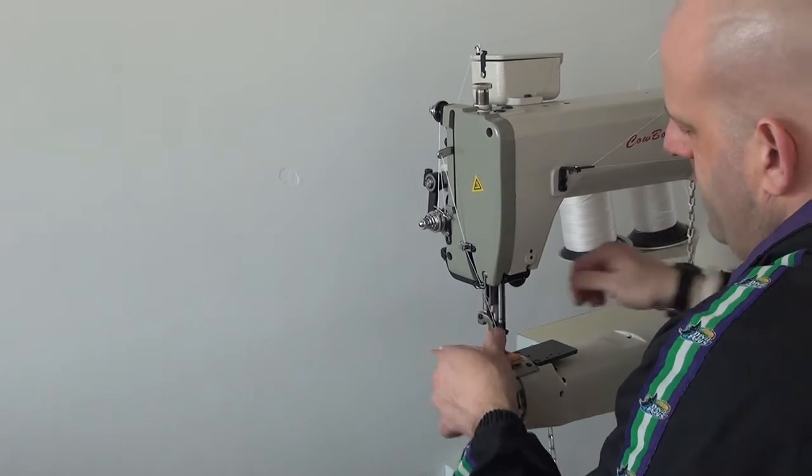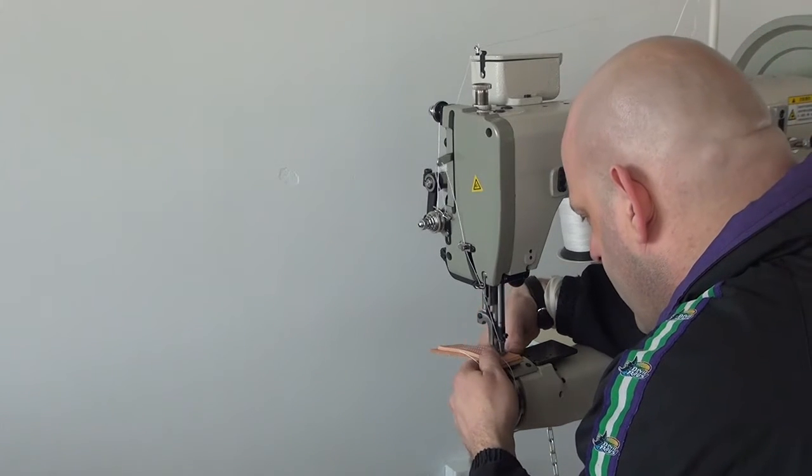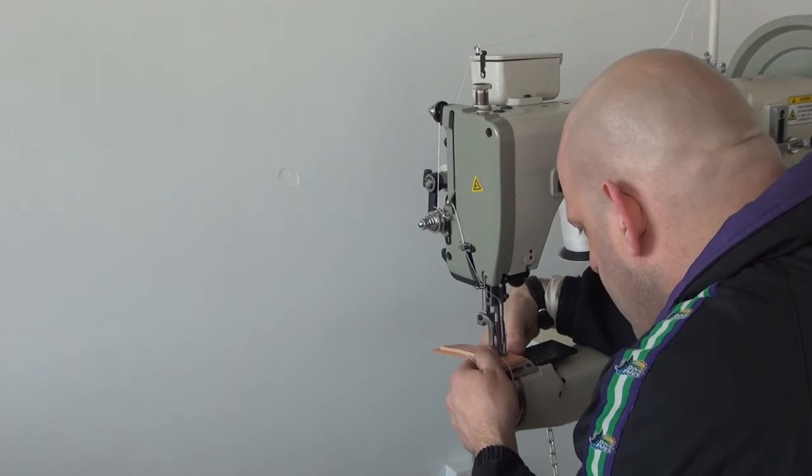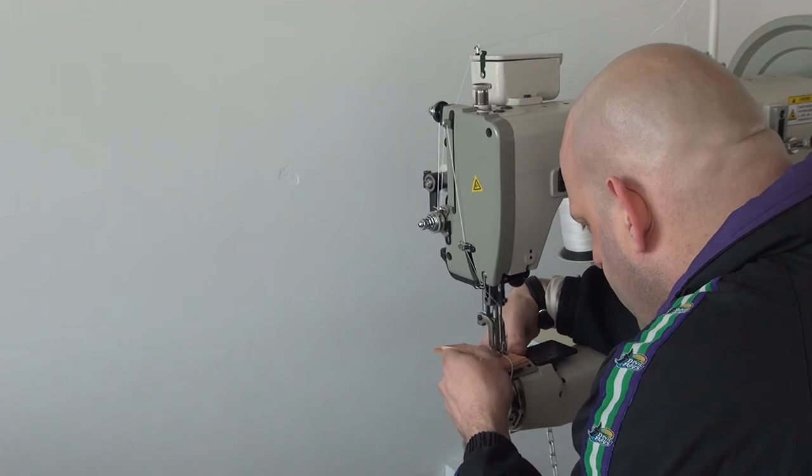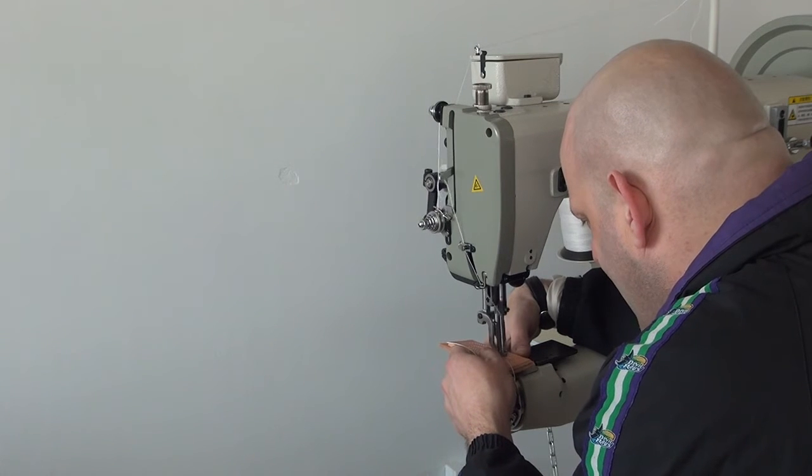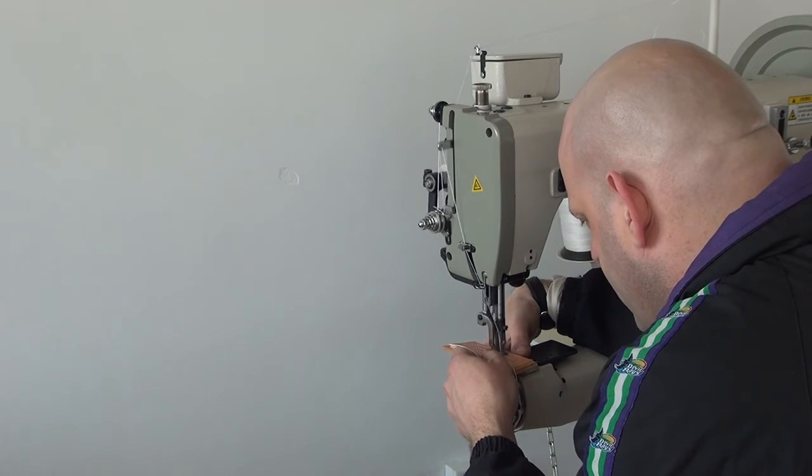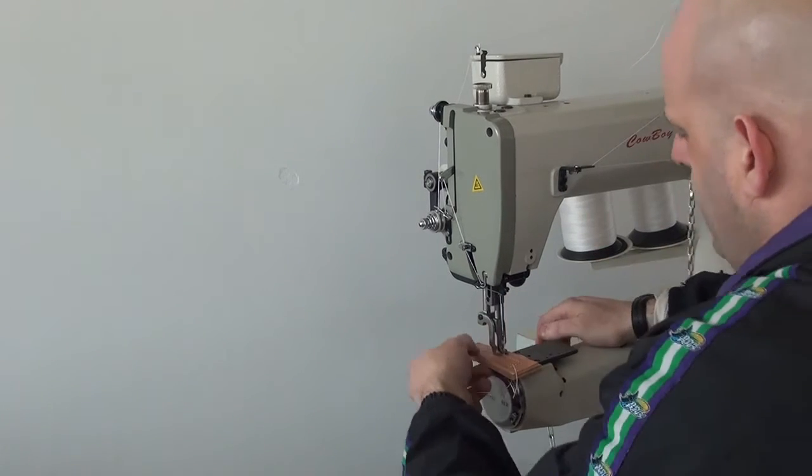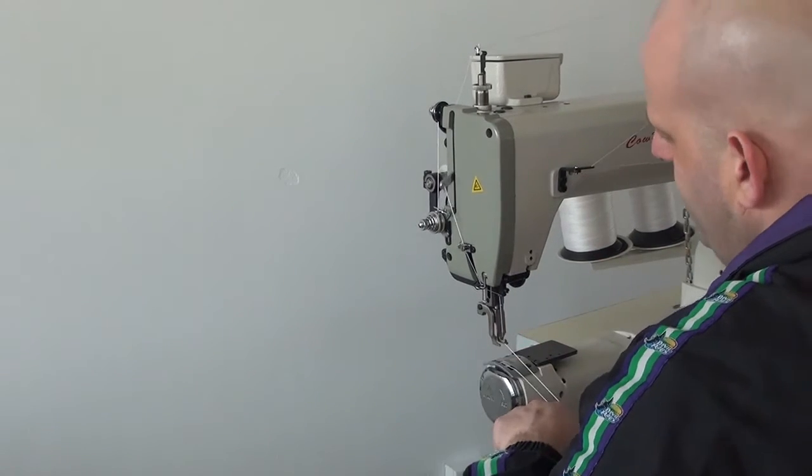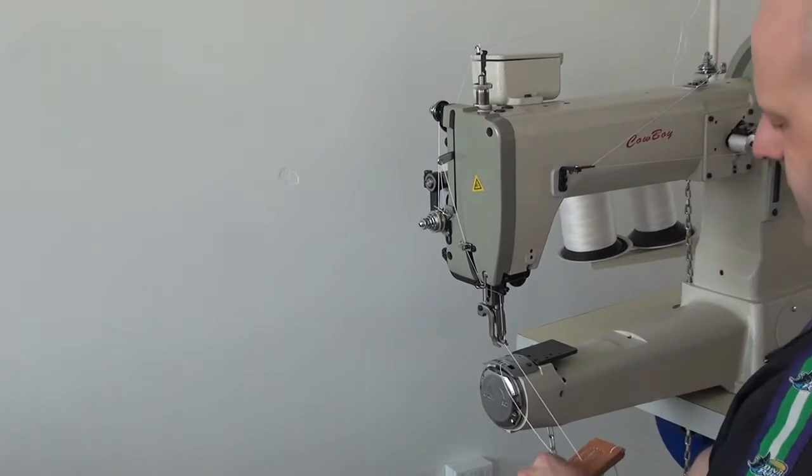Okay, now I'm going to sew in reverse with the sewing machine so you can get an idea of what it looks like for a reverse stitch. One of the hallmark features of the 4500 is its ability to match each reverse stitch, stitch for stitch, hole for hole, so that every hole matches.